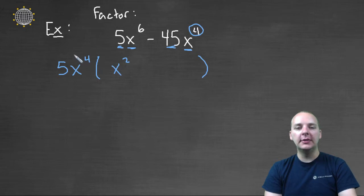And what times five x to the fourth, if I were to distribute this guy back through to these two terms, and make sure that I still equal what I started with, what times five x to the fourth would give me forty-five x to the fourth?